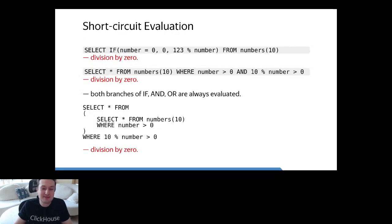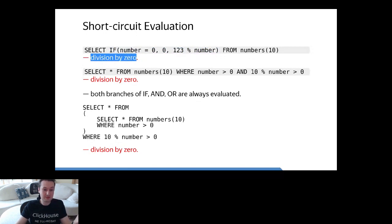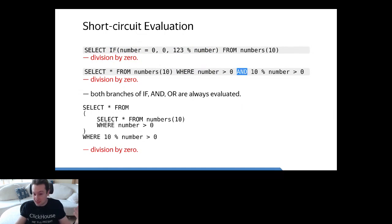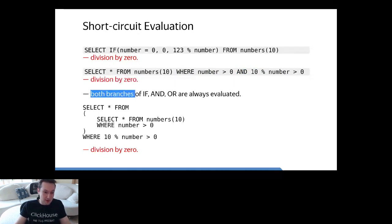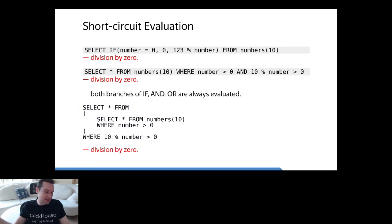Short-circuit evaluation: suppose you want to calculate the remainder of division — you cannot divide by zero, so you write it in a conditional expression. But ClickHouse also raises a division-by-zero error if you write it in a WHERE with AND, because both branches are calculated. Even inside a subquery, the subquery gets optimized away and you still get division by zero. We want to fix this by introducing short-circuit evaluation.